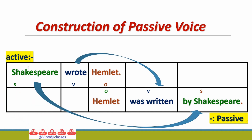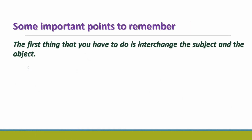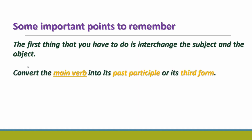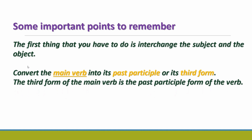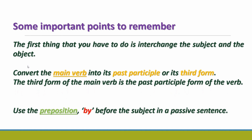According to this rule, we can convert all active sentences into passive. The steps are: first, interchange the subject and the object — as we just saw. Second, convert the main verb into its past participle or third form. Third, use the preposition 'by' before the subject in the passive construction. The third form of the main verb is also called the past participle form of the verb.